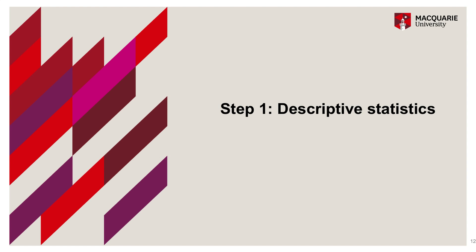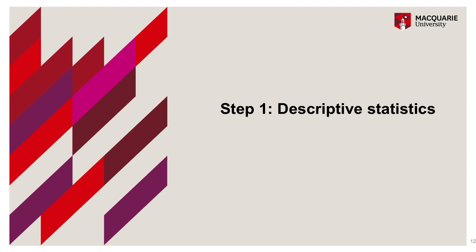In terms of understanding our data, the first step is always to look at descriptive statistics — summarising the data to understand our sample, whether the sample is representative of our population, and the distributions of variables. The first frequency table shows our experimental group variable: we have 50 individuals in each group — 50 in the mind-wandering control condition and 50 in the mindfulness condition — a perfectly even split because individuals were randomly allocated.